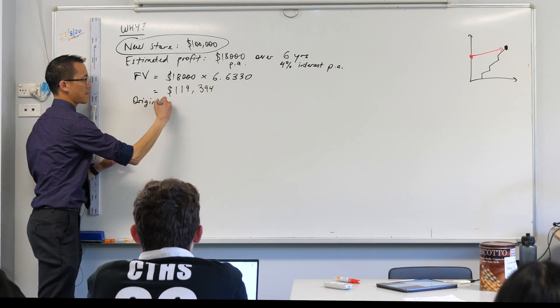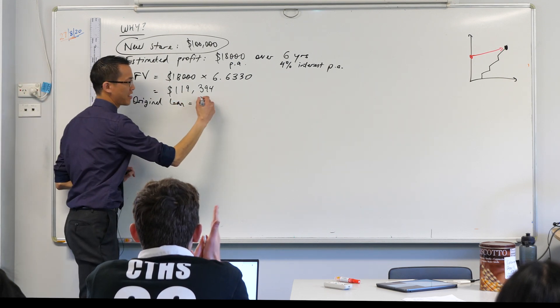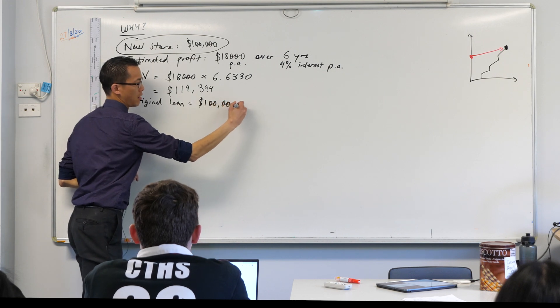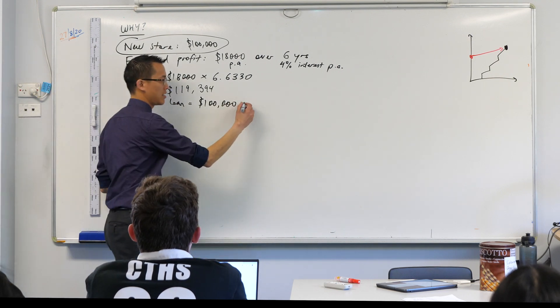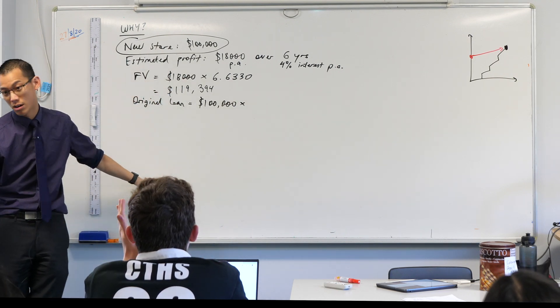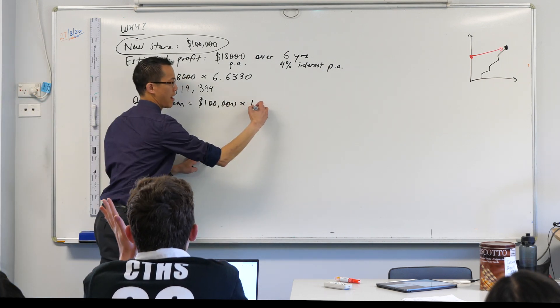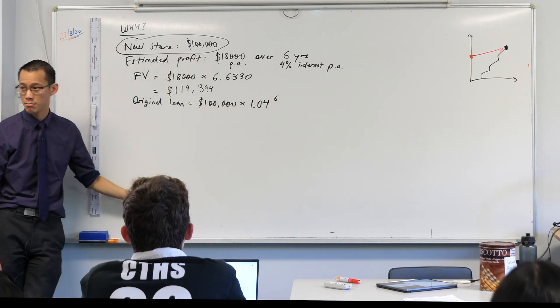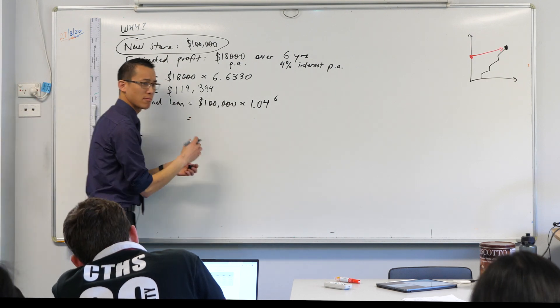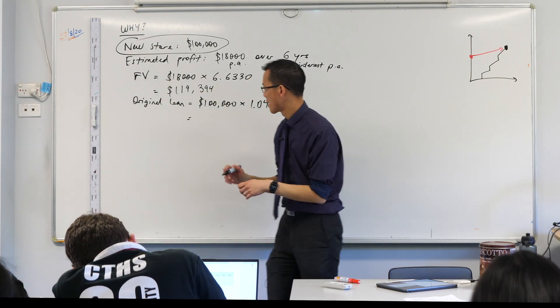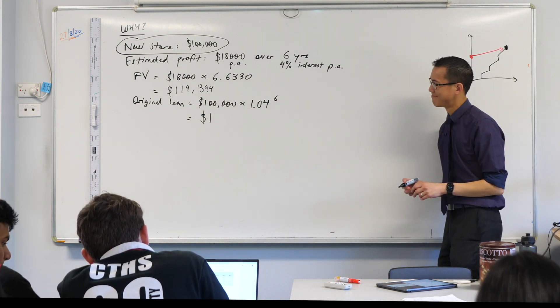So what I need to do is I need to work out the original loan. It started out at a hundred thousand dollars, but I had to hold on to that loan over the course of these six years that I own this business. So therefore, over those six years, they have earned six years of interest. Interest is 1.04, right? That's going to add me on, and I'm going to raise it to the power of six because it happens six times. What's this sum? Go ahead and evaluate it for me.